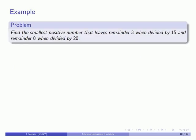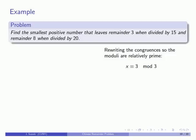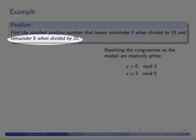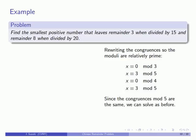Let's take a different problem: find a number that leaves remainder 3 when divided by 15, and remainder 8 when divided by 20. We rewrite those congruences so the moduli are relatively prime. Since 15 is 3 times 5: x congruent to 3 mod 3 is x congruent to 0 mod 3, and x congruent to 3 mod 5. Since 20 is 4 times 5: x congruent to 8 mod 4 is 0 mod 4, and x congruent to 8 mod 5 is 3 mod 5. The congruences mod 5 are the same — x congruent to 3 in both cases — so this problem is solvable, and we don't need the repeated congruence.